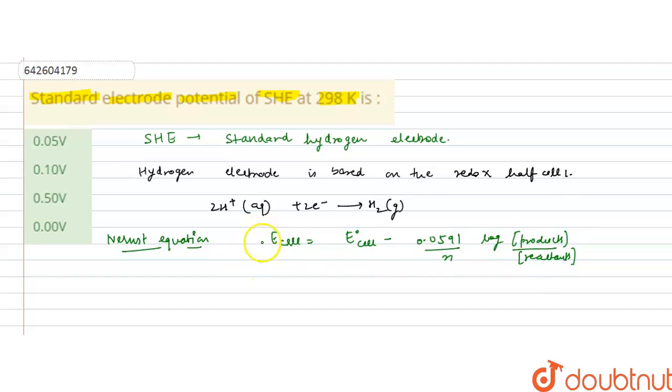For this reaction, E_cell = E°(H⁺/H₂) - (0.0591/2) × log(P_H₂/[H⁺]²), where n = 2 since two electrons are involved.